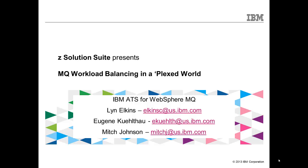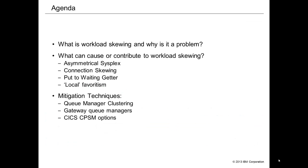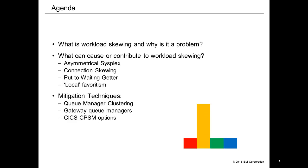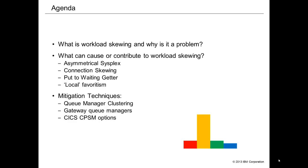What we're going to talk about is what workload skewing is and why it is a problem in some environments, and what can cause and contribute to it. Some of the examples include an asymmetrical sysplex, connection skewing, put-to-waiting getter, and local favoritism. We'll also talk about mitigation techniques such as queue manager clustering, gateway queue managers, and CICS CPSM options.